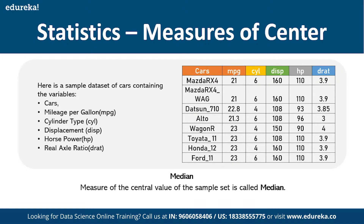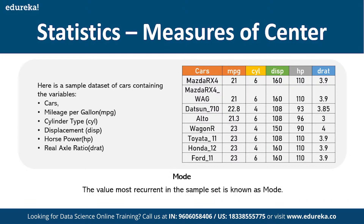Median is found by sorting the data in ascending or descending order and taking the middle value. Unlike mean, median is not influenced by outliers. Outliers are data values that fall outside the normal range — for example, if most students score 70-75 but one scores 5, that student is a lower outlier. Outliers heavily influence the mean, which is why we use median in some cases or remove outlier values during data preprocessing.